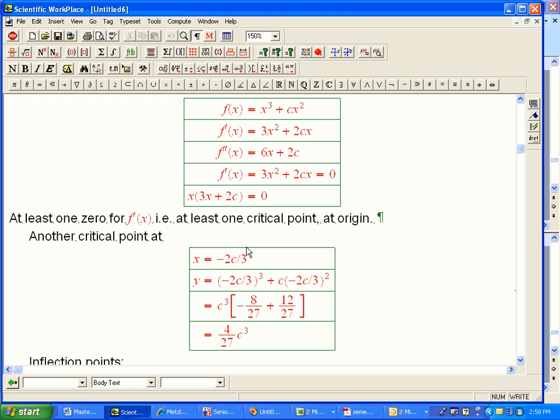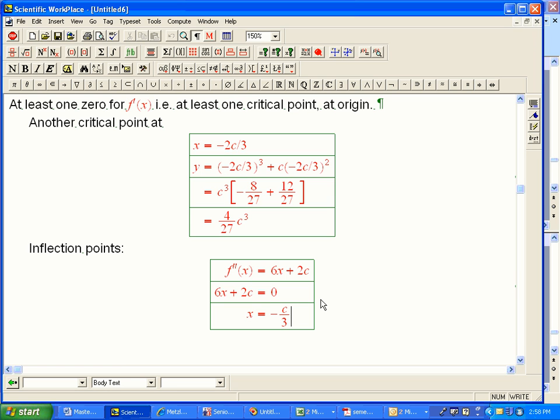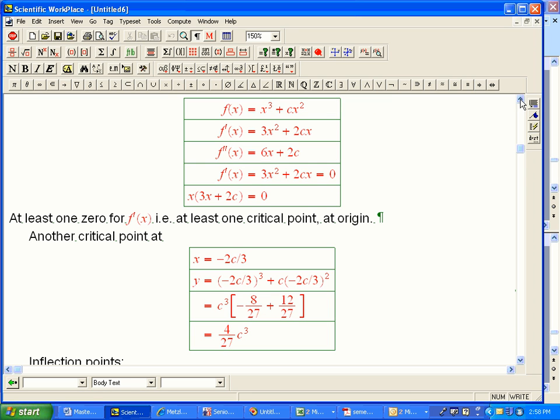when does this function have a critical point in the right-hand side of the number line, you can say that's going to be for all c's, c is less than 0, so this will be positive. And when does it have an inflection point in that right-hand side? Same answer was when c is negative.